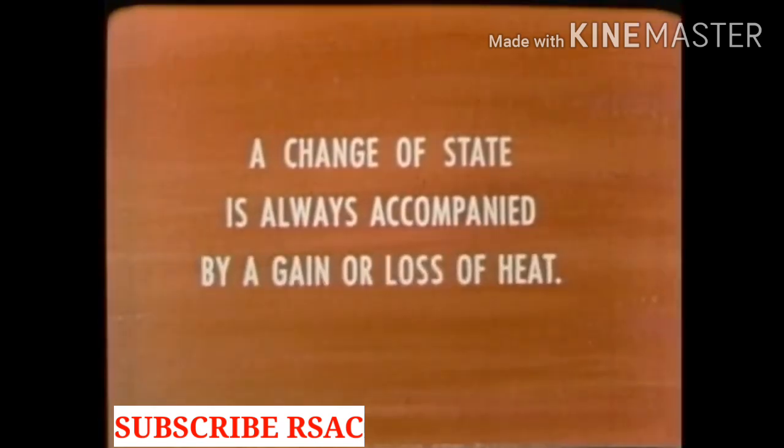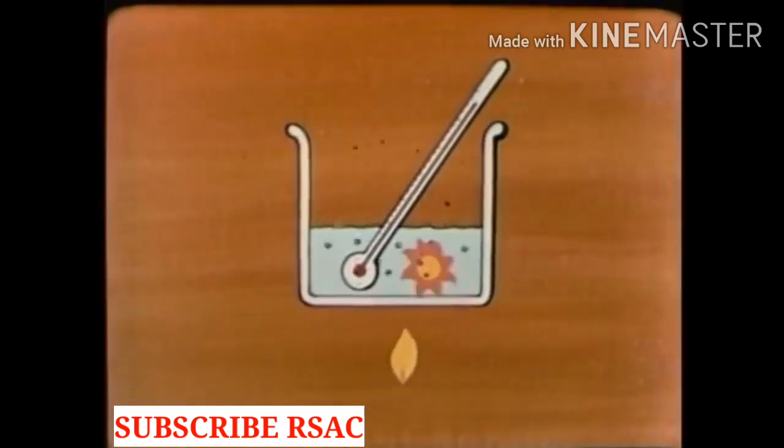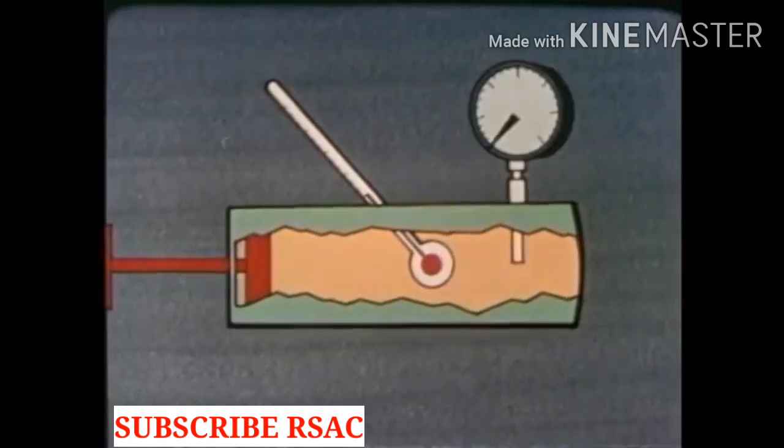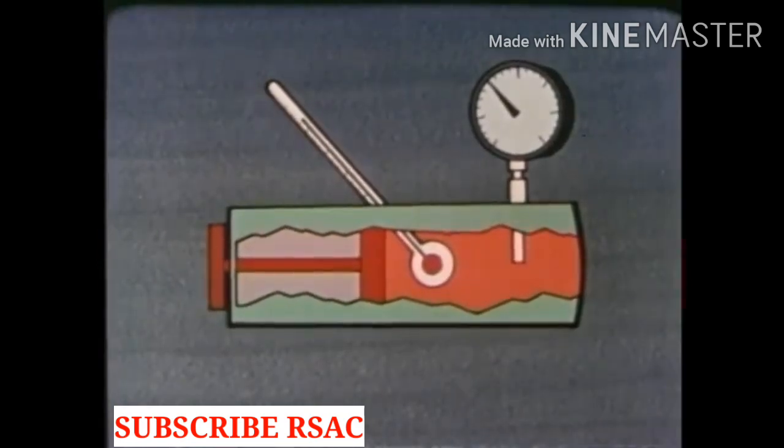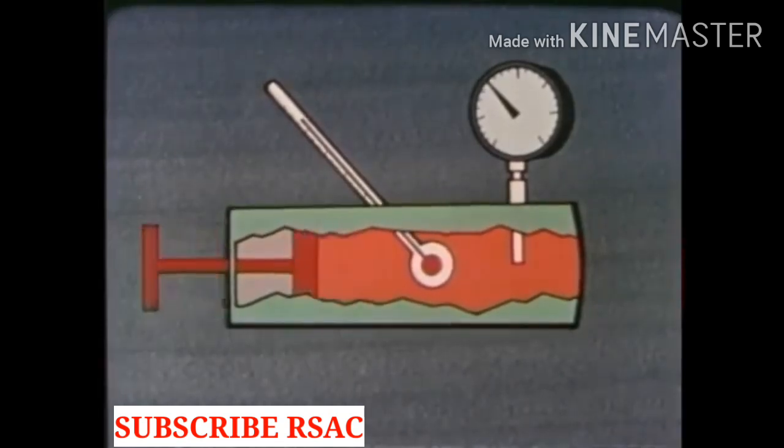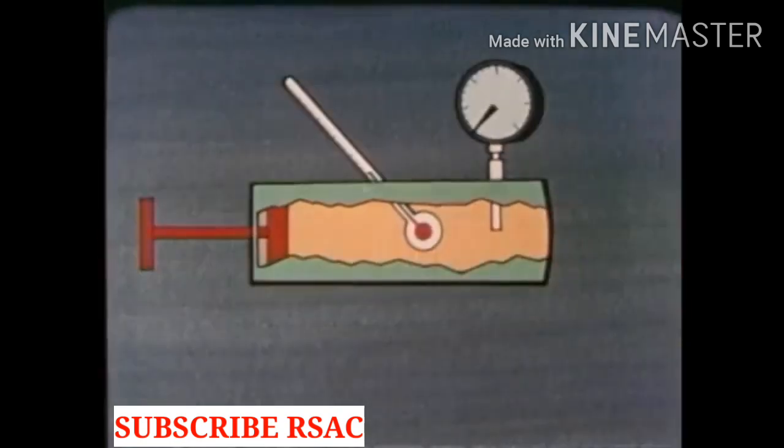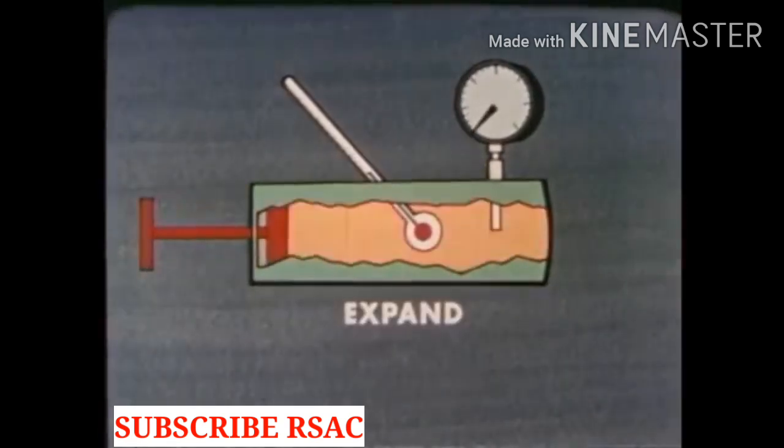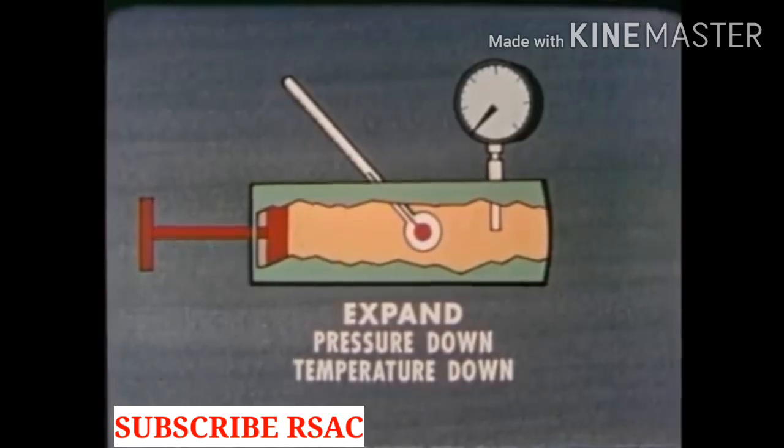Now a change of state is always accompanied by a gain or loss of heat. This is a very important point. Any substance takes in heat when it boils or changes from a liquid to a gas, and any substance gives off heat when it condenses or changes from a gas to a liquid. Here's a container filled with gas. We add a thermometer to measure the temperature of the gas and a pressure gauge to measure its pressure. What happens if you push in on the piston? Answer: the pressure increases and the temperature increases. Now let the piston out. The pressure goes down and the temperature goes down. The rule is: when a gas is compressed the pressure goes up and the temperature goes up. When a gas is allowed to expand the pressure goes down and the temperature goes down. It's true for any gas.